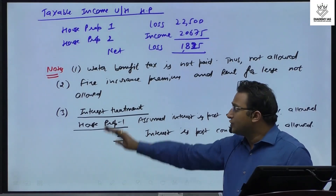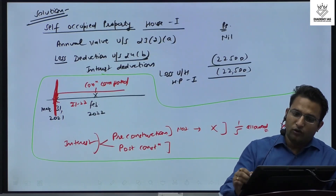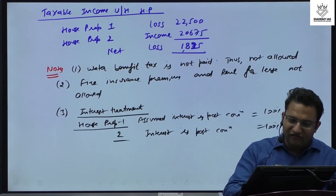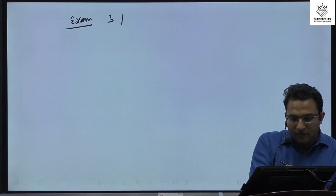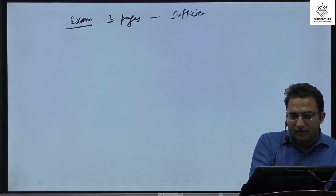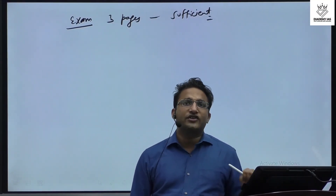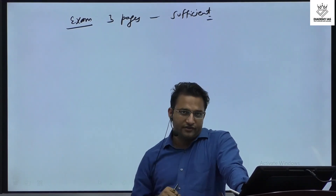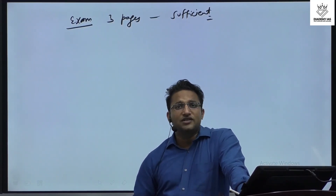This is how we complete the answer. The notes at the end are very important, along with the complete presentation covering the calculation of House 1, House 2, and the combined total income. In the exam, you get three pages, which is more than sufficient. Income tax questions are very doable with very low chances of mistake due to less interlinkage between figures.